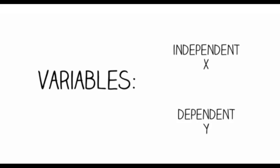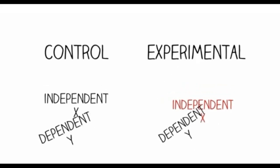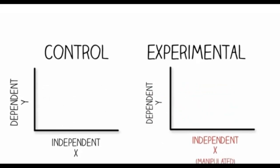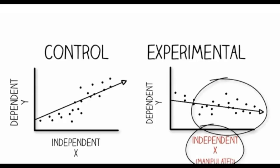A dependent variable is something that we want to measure as an outcome. In an experiment, we manipulate the independent variable by creating a control condition, which is basically no manipulation, and an experimental condition, where we have manipulated something. In both conditions, we measure the dependent variable to determine if there's a difference in observed outcomes. So the outcome of variable Y is dependent on variable X, because as we manipulated X, the outcome Y was affected.